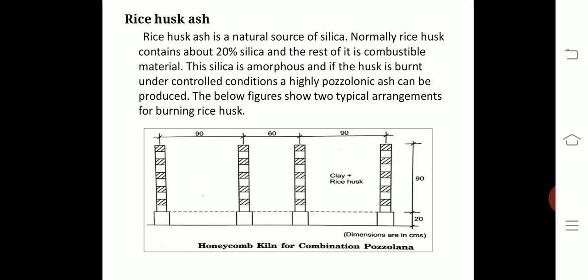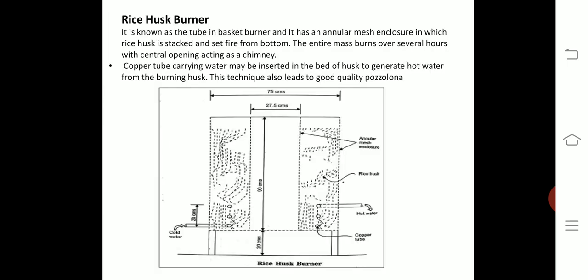The combination pozzolano obtained from this process is a mixture of burnt clay and rice husk ash. This technique has the advantage of producing a relatively large quantity of pozzolano. It must be noted that the national availability of rice husk ash is around 2 million tons of combination pozzolano which can be generated in the country. There is another arrangement for burning rice husk ash which we will see next.